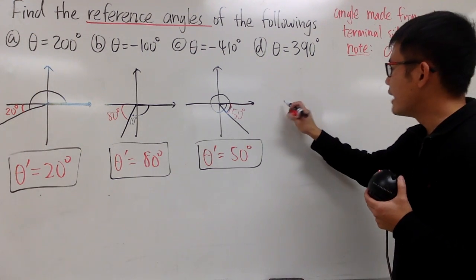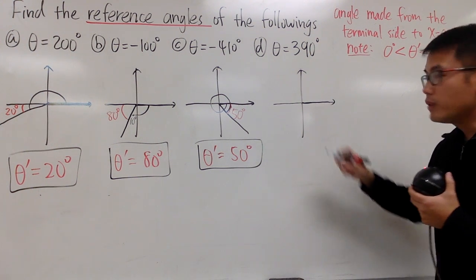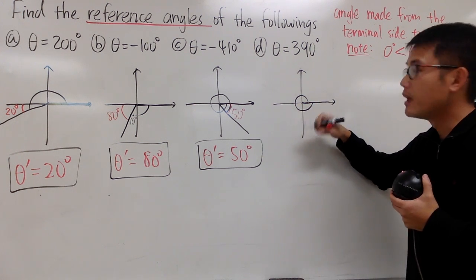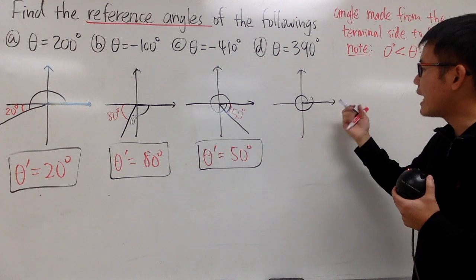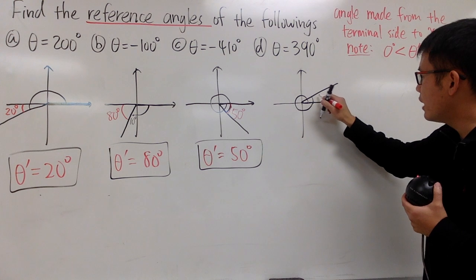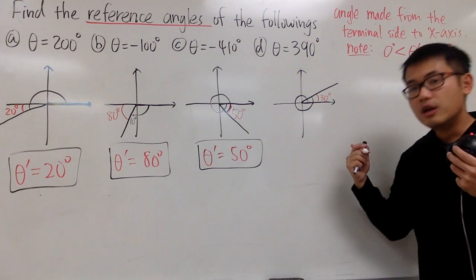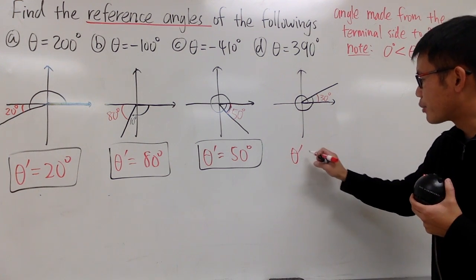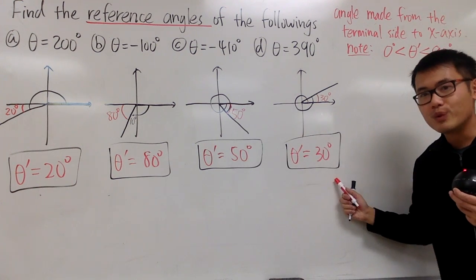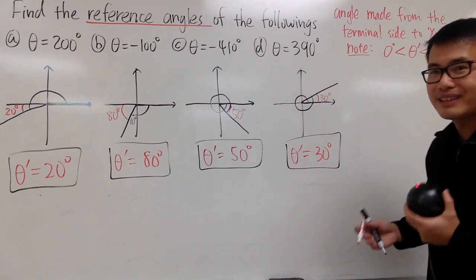Lastly, 390 degrees — this is a positive angle. Start with the positive x-axis and rotate counterclockwise. This much here is 360 already, so I'll have to go 30 degrees more like that and draw the terminal side. That's 30 degrees from the terminal side to the x-axis, so that's exactly the reference angle. Theta prime equals 30 degrees. And with that, we are done. Leave a comment below if you have any questions.